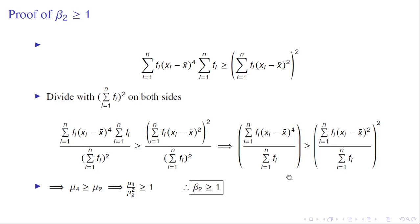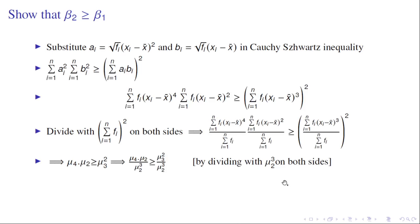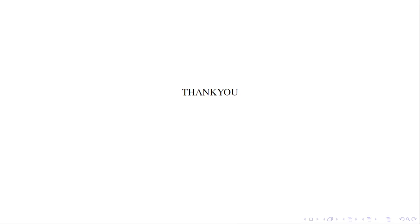These inequalities — β1 ≥ 0, β2 ≥ 1, and β2 ≥ β1 — are commonly asked in exam questions. In this lecture we learned about the different alpha, beta, and gamma coefficients and the proofs of inequalities based on central moments. Thank you.